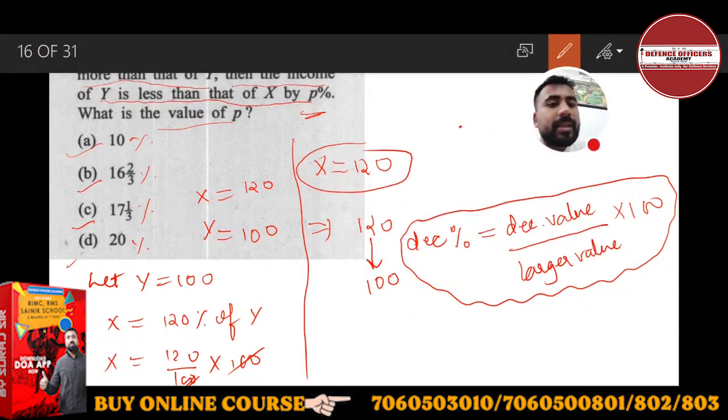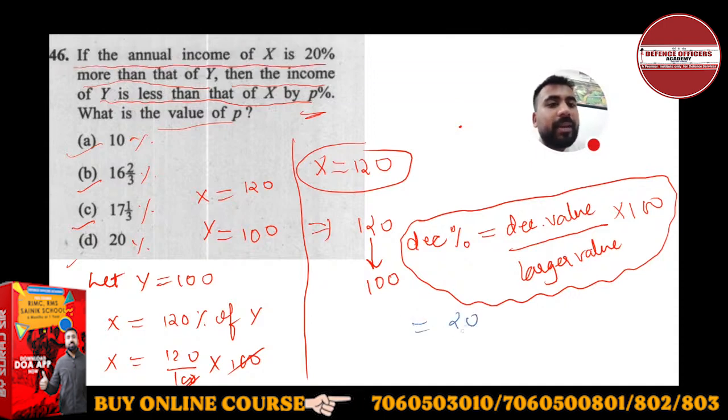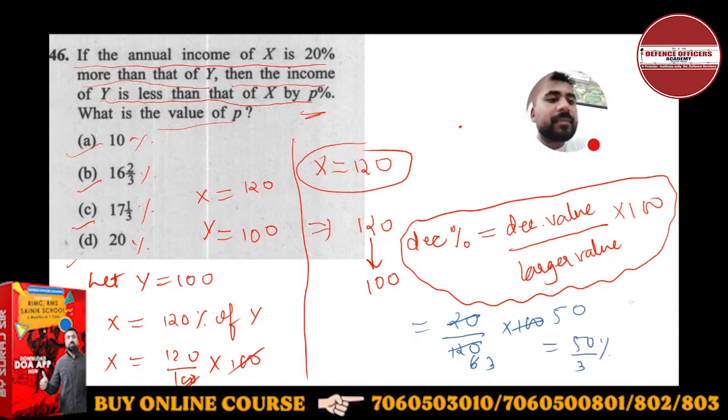So decreasing value is 20, larger value is 120, times 100. This becomes 20/120 × 100, which equals 50/3 percent. If you write it in mixed fraction, 3 times 16 is 48, so this is 16 and 2/3 percent. B will be the right answer.